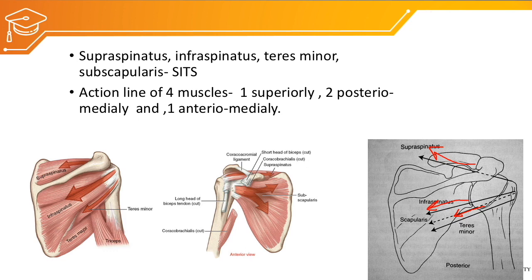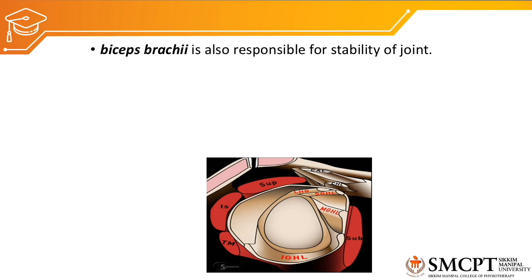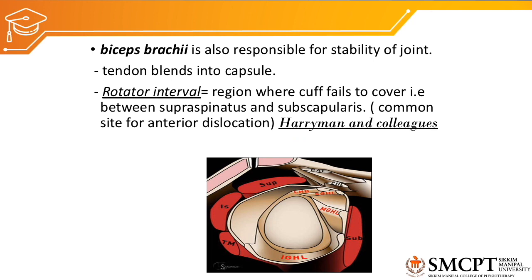Rotator cuff muscles are the important dynamic stabilizers of the glenohumeral joint, along with deltoid and the long head of biceps. Biceps is also responsible for stability of this joint, as the long head of biceps tendon blends with the capsule. There is a small space in the shoulder area called the rotator interval — this space is not covered by the supraspinatus or the rotator cuff, and is therefore vulnerable, being a common site for anterior dislocation.